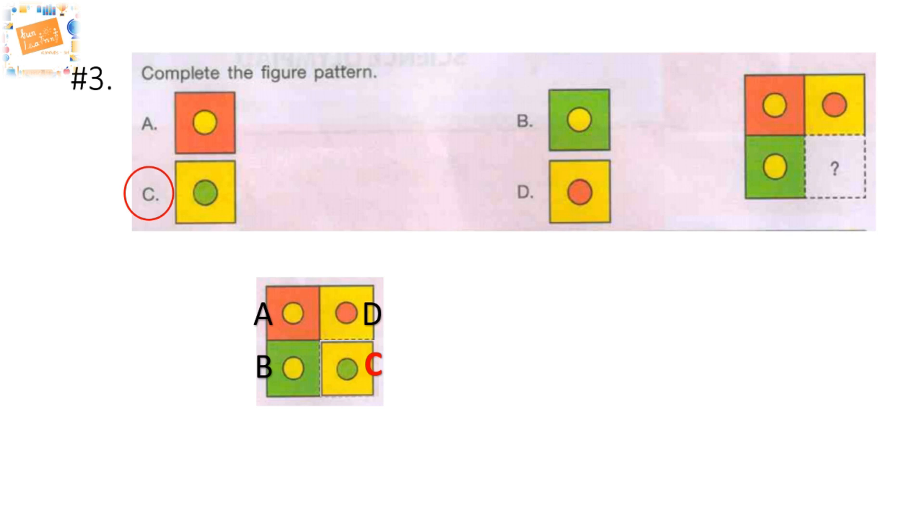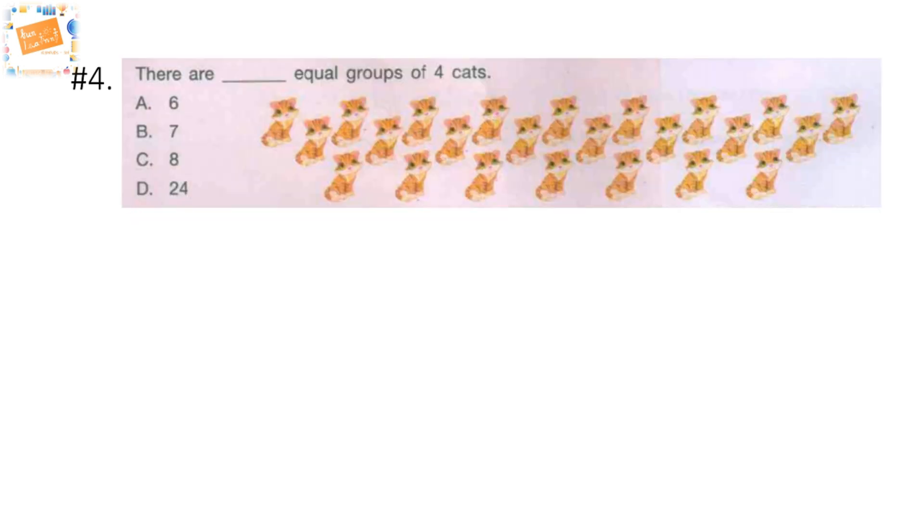Next question: there are dash equal groups of cats. So here we have a number of cats. We have to count the number of groups that have four cats. How can we do that? Do you want to try?